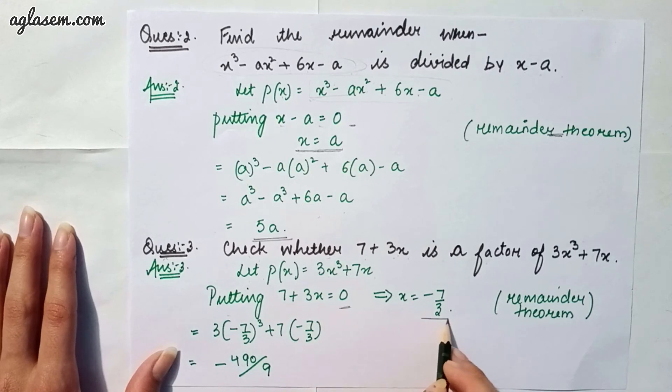We will get x as -7/3. That is, using remainder theorem. So, our answer will be -490/9.